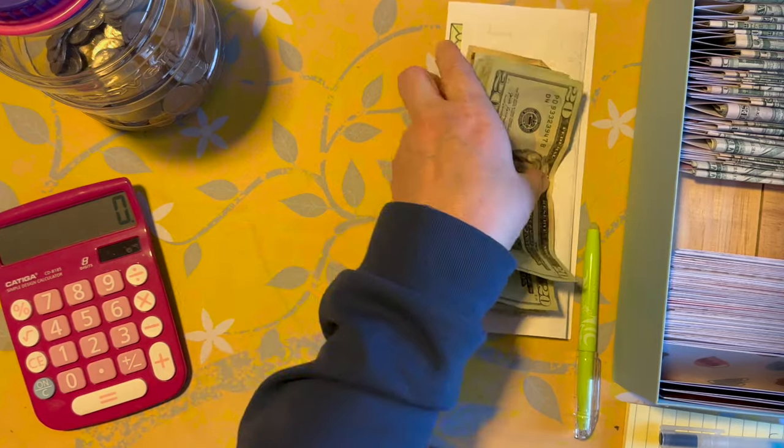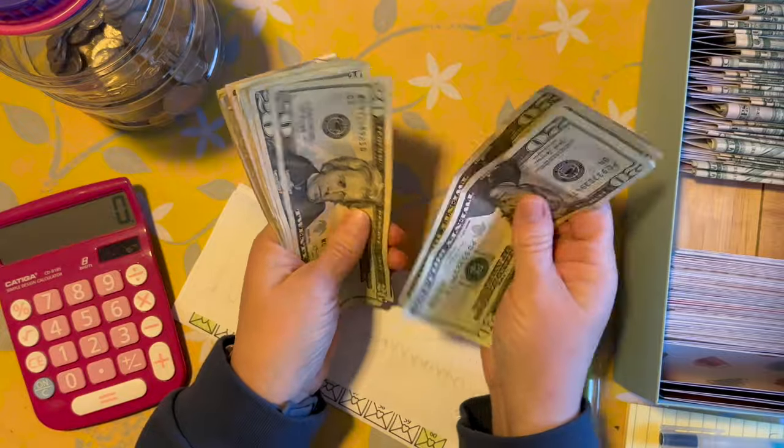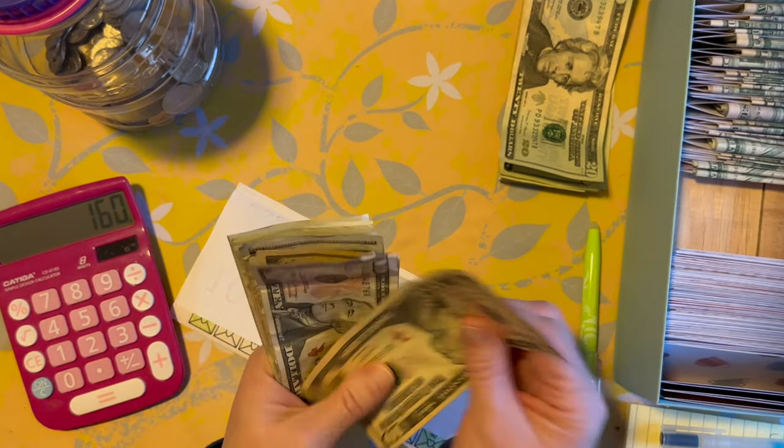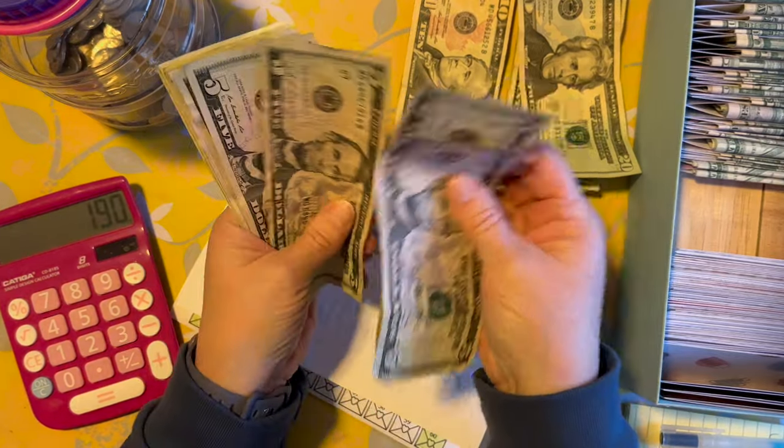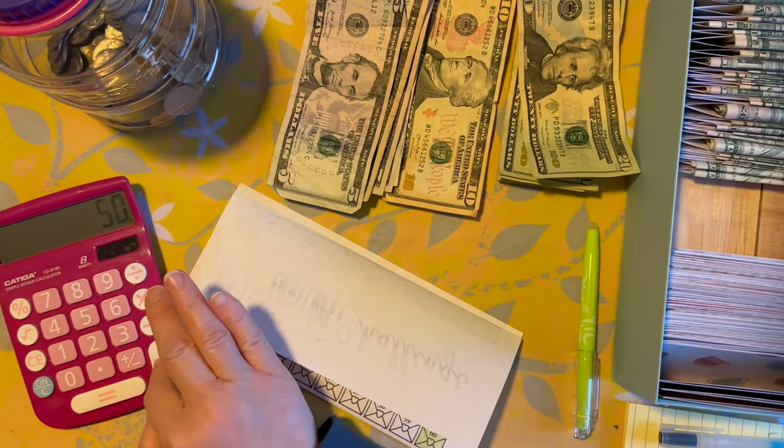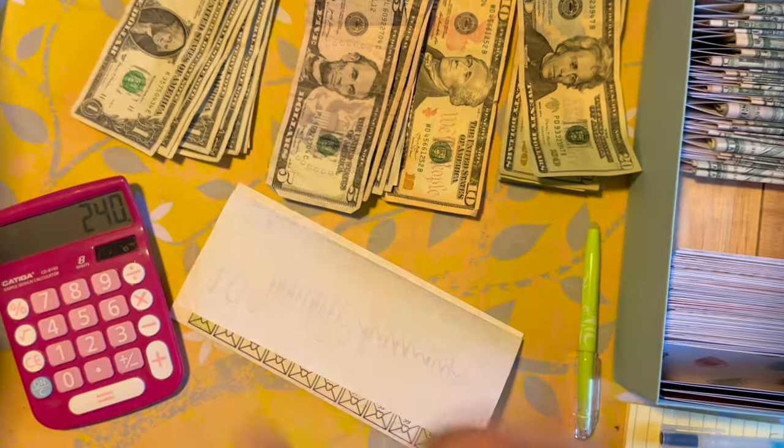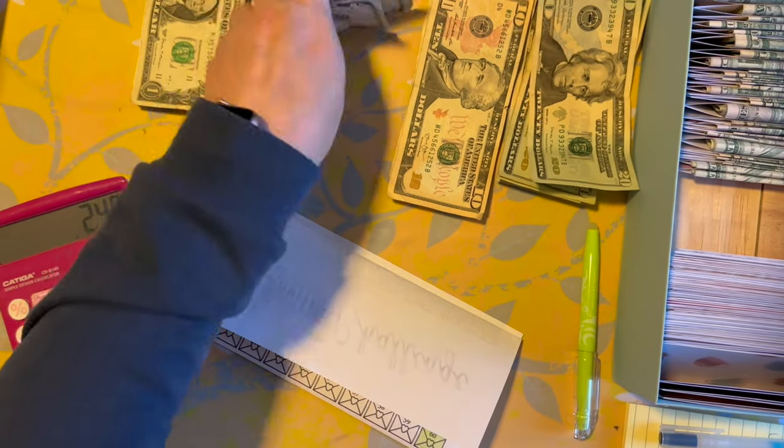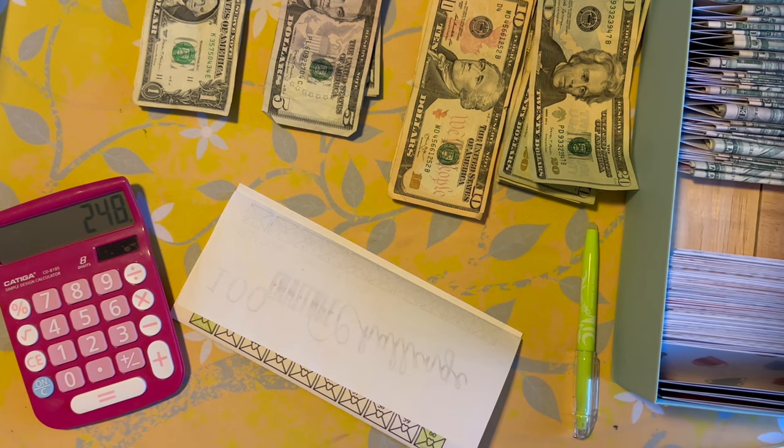Now let us see how much we have. I think I know but we'll make sure. So we have two, four, six, eight, ten, two, four, six, so 160. I'm using my calculator. Ten, twenty, thirty, five, ten, fifteen, twenty, twenty-five, thirty, thirty-five, forty, forty-five, fifty, and one, two, three, four, five, six, seven, and eight. So we have 248 dollars to stuff this month.